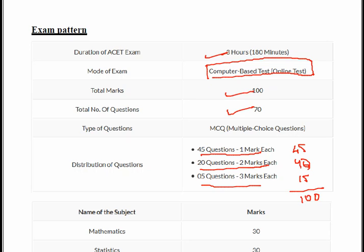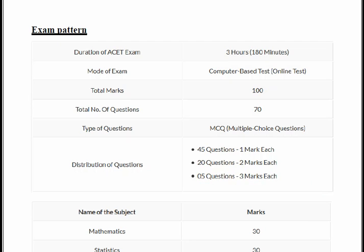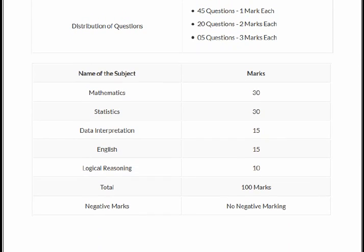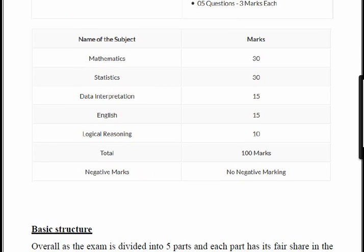And now if you look at the subject wise distribution, then what we have here is that for maths we have 30 marks, for stats we have 30 marks, in DI or the data interpretation and logical reasoning 15 and 10 each, and English we have 15 marks. So total 100 marks. One good thing, no negative marking. So you can maximize your attempt by attempting all the questions. So this is all about the examination pattern and the number of subjects.